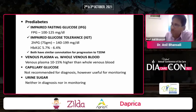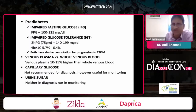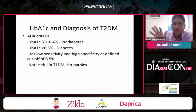Regarding venous plasma glucose versus whole venous blood: physicians should know what sample the lab is processing. If it is venous plasma, values are 10 to 15 percent higher, mainly because the plasma volume is predominant and RBCs are not able to utilize glucose. Capillary glucose is not recommended for diagnosis but is useful for monitoring. Urine sugar is not useful either in diagnosis or monitoring.